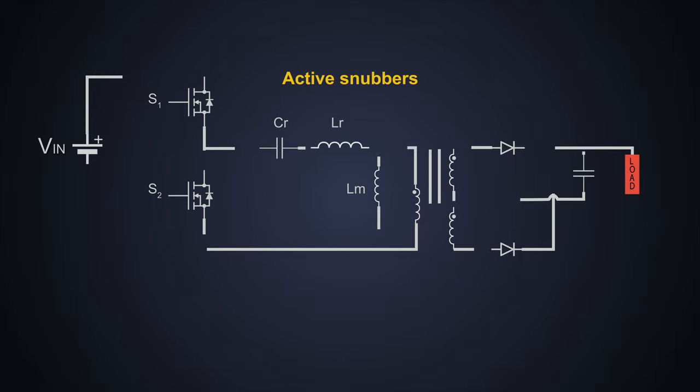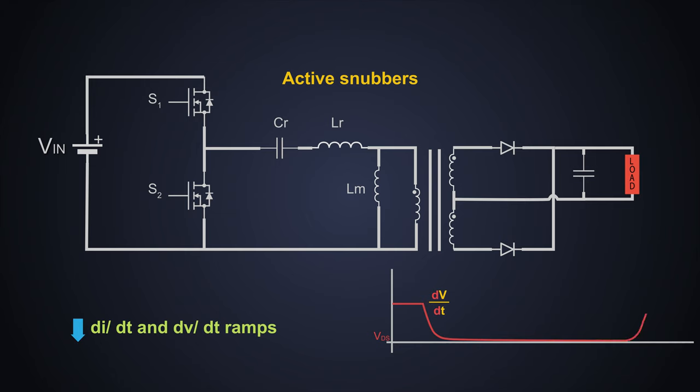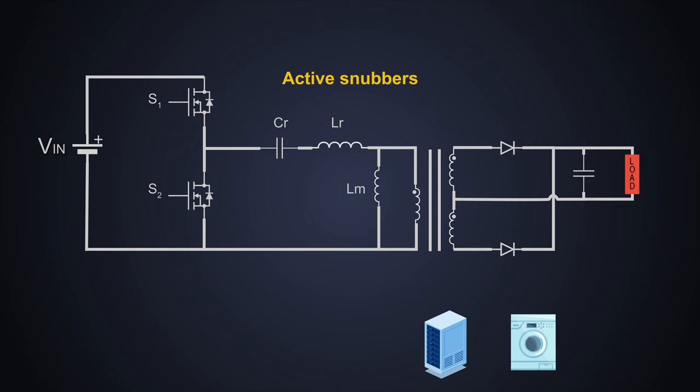The other method for soft switching is by using an active snubber circuit which is achieved by resonant circuits through partial resonance. Soft switching through the resonance converter helps to reduce dI by dT and dV by dT ramps which is effective in reducing the switching harmonic components and transient noise. As we saw in the last video, resonant circuits are used in various switch mode power supplies having a high frequency transformer such as DC to DC converters.